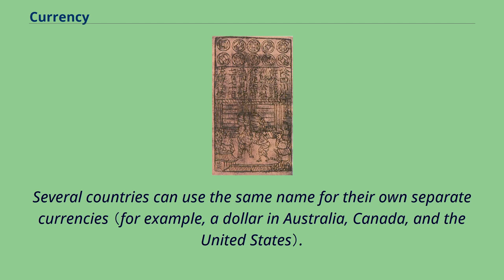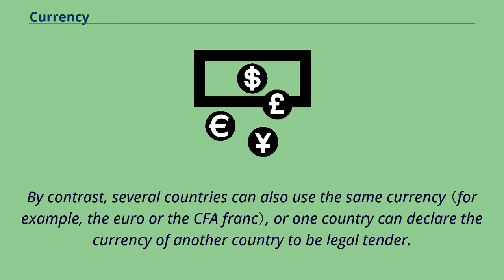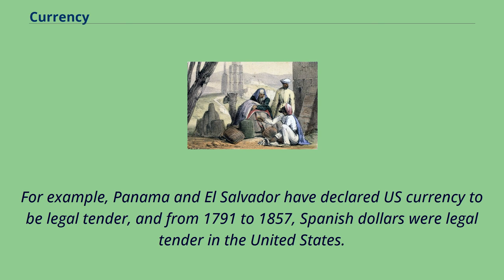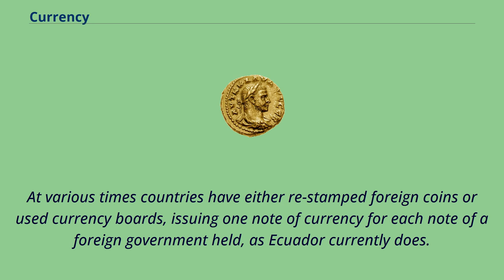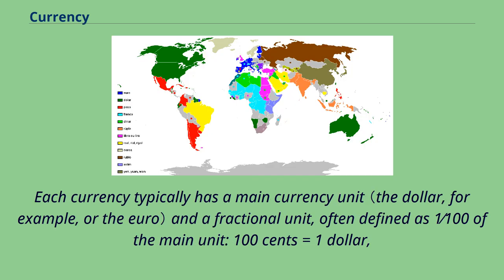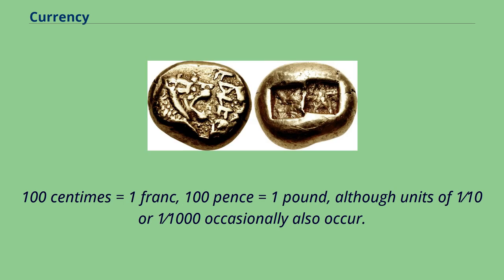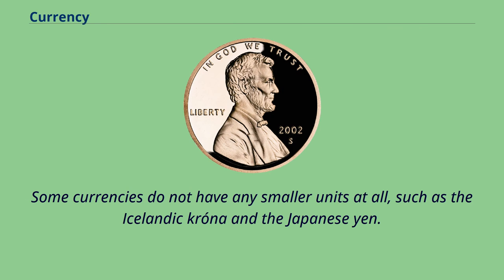Several countries can use the same name for their own separate currencies. By contrast, several countries can also use the same currency, or one country can declare the currency of another country to be legal tender. For example, Panama and El Salvador have declared US currency to be legal tender, and from 1791 to 1857, Spanish dollars were legal tender in the United States. Each currency typically has a main currency unit and a fractional unit, often defined as one one-hundredth of the main unit — one hundred cents equals one dollar, one hundred centimes equals one franc, one hundred pence equals one pound — although units of one-tenth or one one-thousandth occasionally also occur. Some currencies do not have any smaller units at all, such as the Icelandic krona and the Japanese yen.